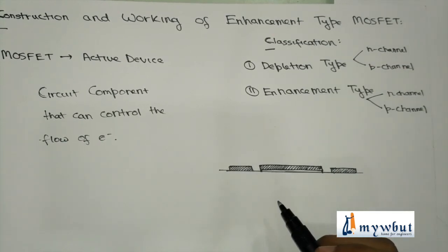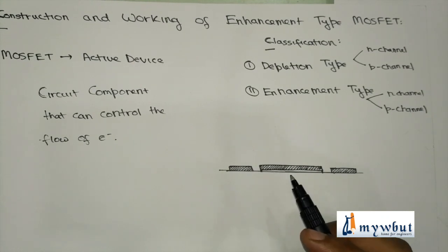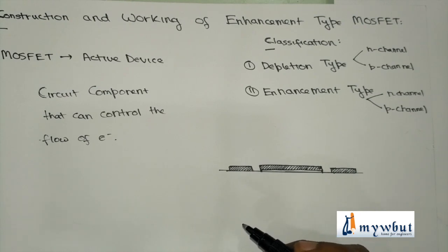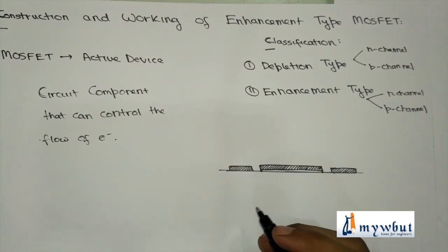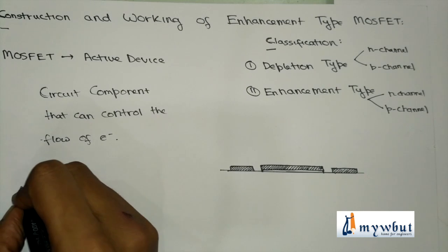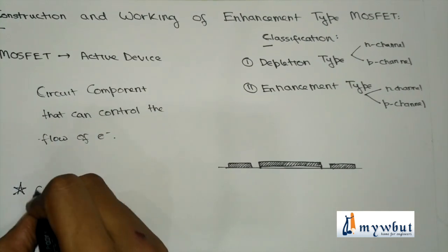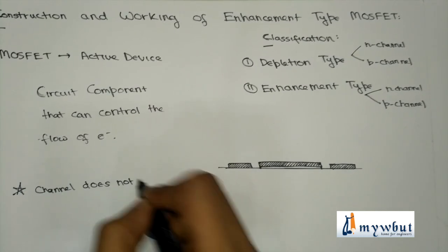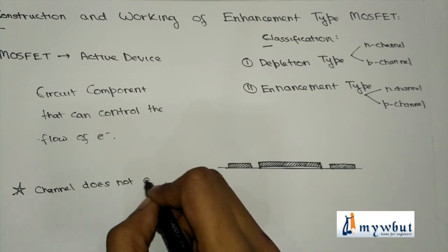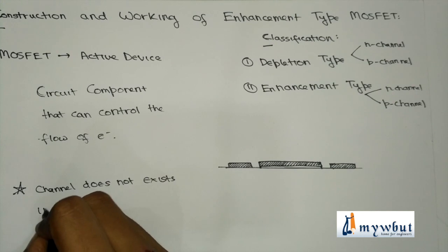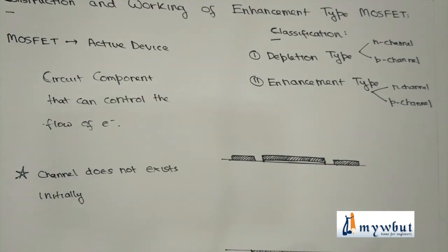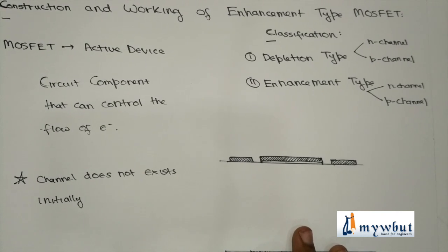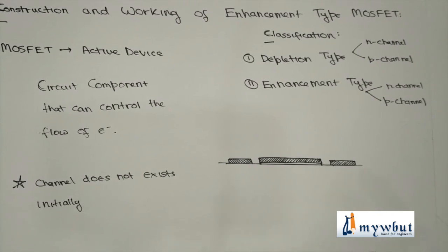Here we will be studying the construction of N-channel enhancement type MOSFET. Enhancement type MOSFET is known as that type because the channel does not exist initially — the channel is enhanced. In enhancement type MOSFET, always remember that the channel does not exist initially, but due to some external voltages provided, the channel gets enhanced.